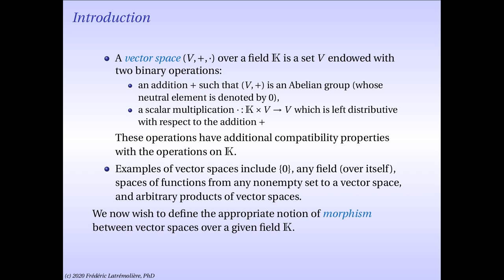Let's review our previous lectures. A vector space V plus dot over a field K is a set V endowed with two binary operations: an addition plus, such that V plus is an abelian group whose neutral element is denoted by zero, and a scalar multiplication dot from K times V to V, which is left distributive with respect to the addition plus. These two operations have additional compatibility properties with the operation on the field K.